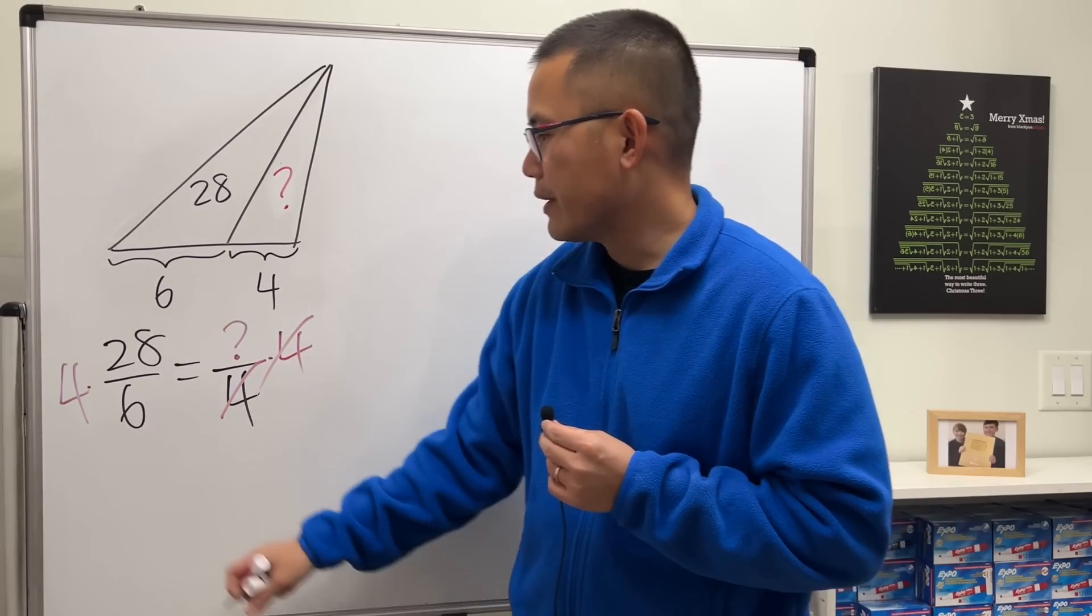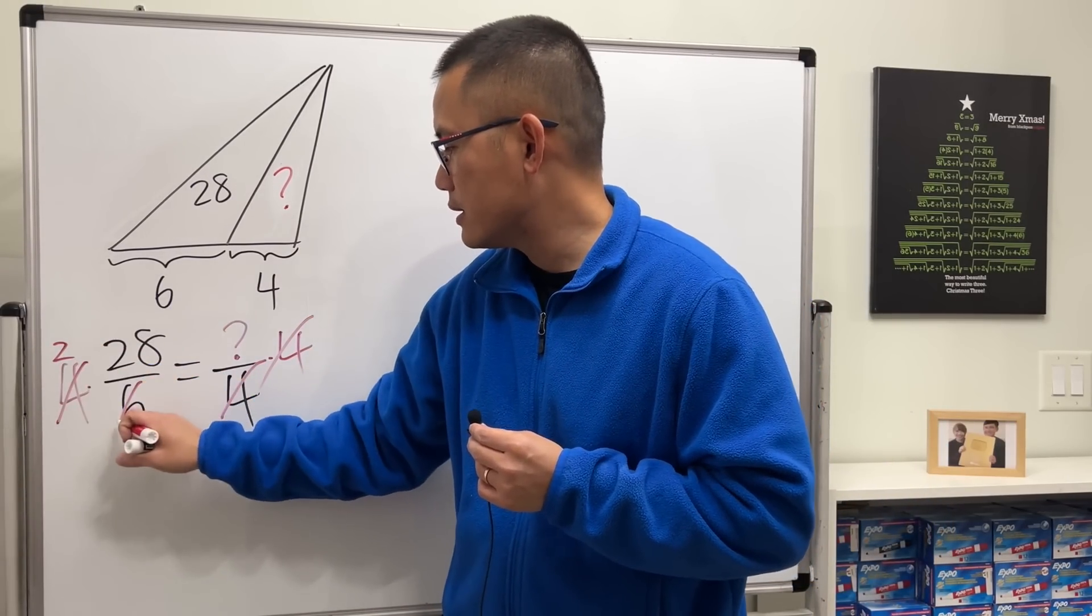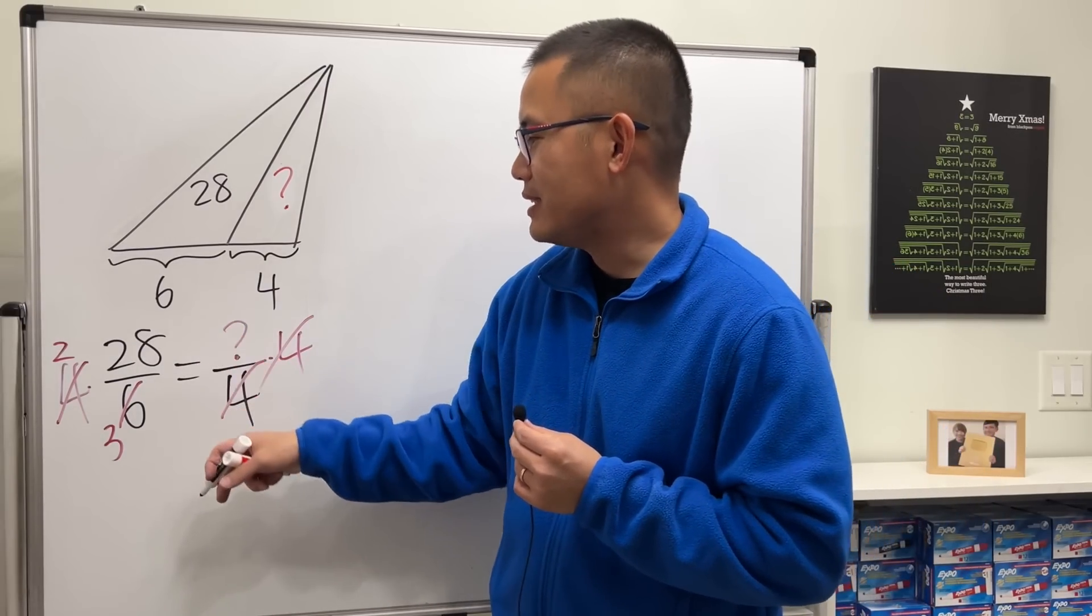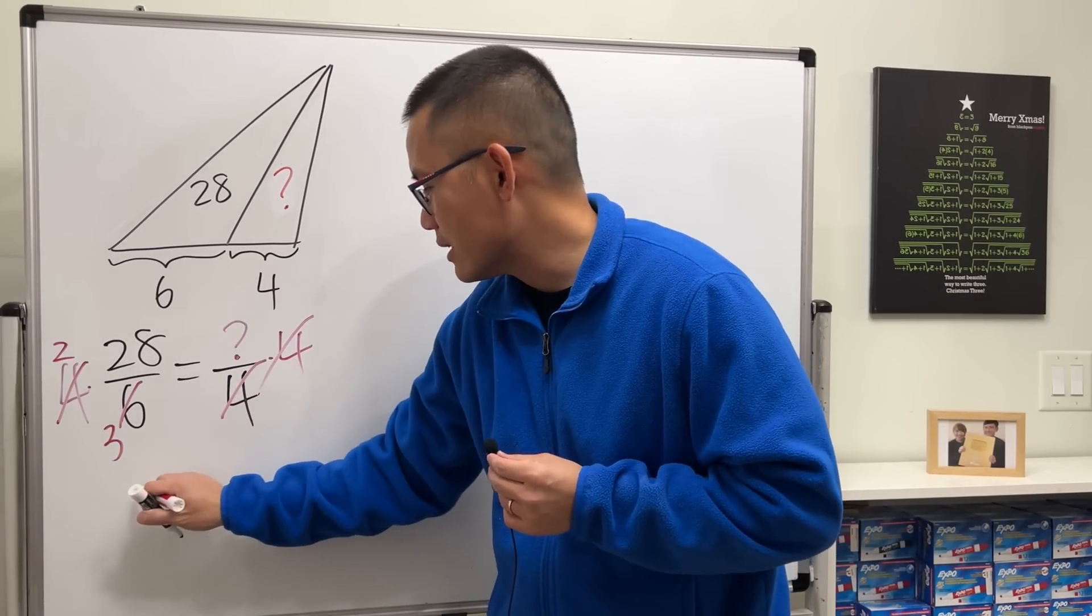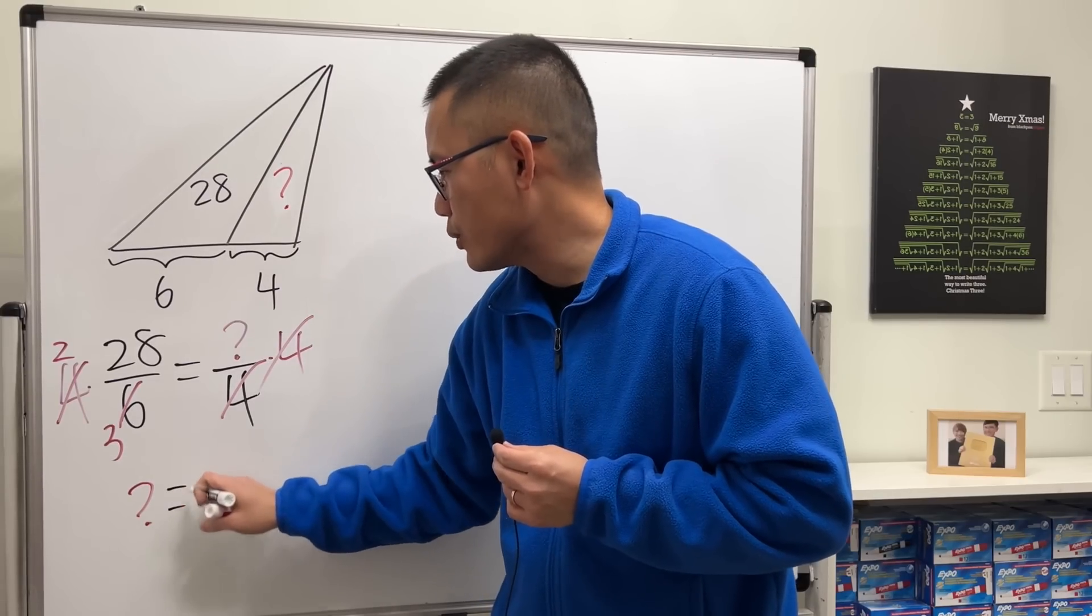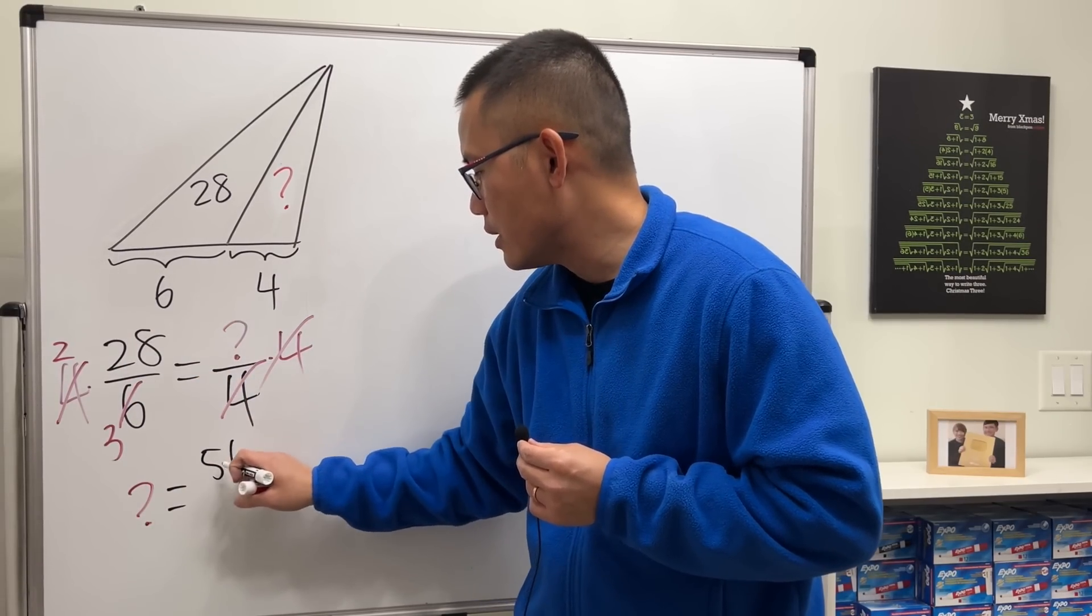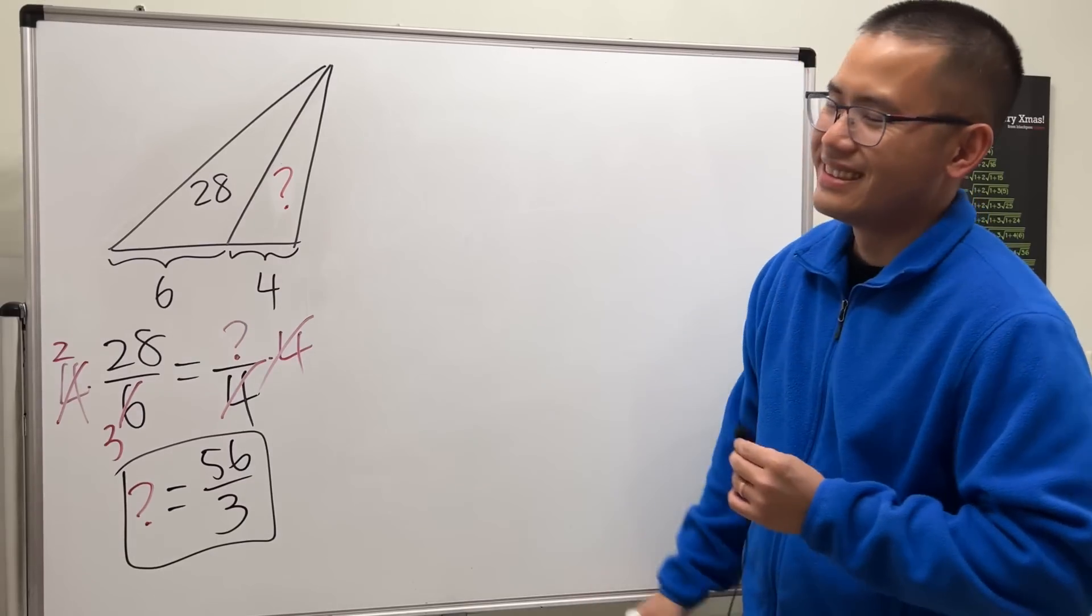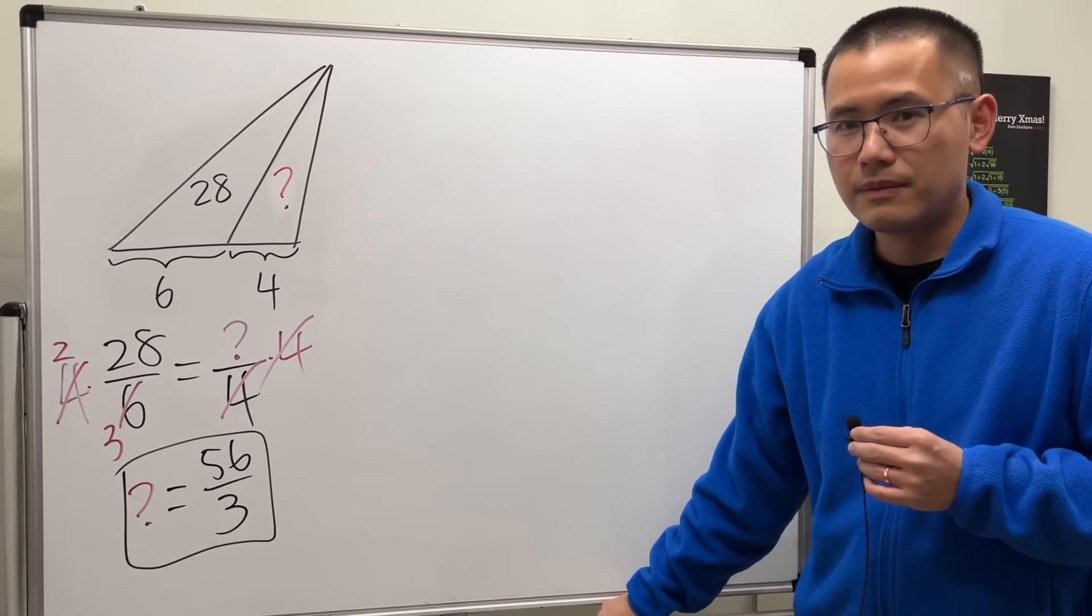So that this and that cancel. Reduce this by 2 first - 2 times 28 is 56. So you can see that question mark, it's equal to 56 over 3. That's it.